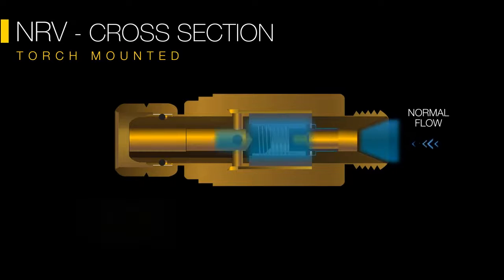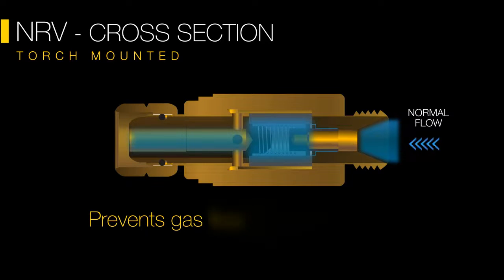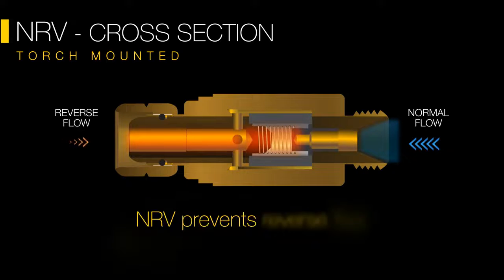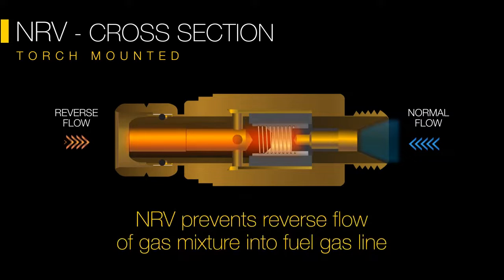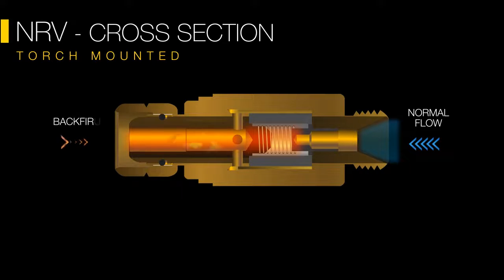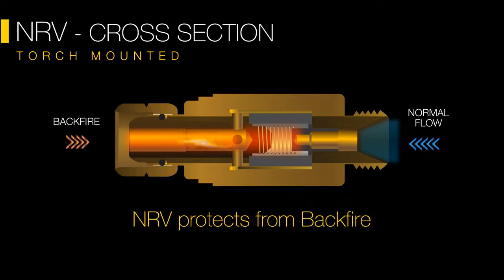The non-return valve allows gas to flow in only one direction. It shuts off gas flow in the reverse direction and prevents the reverse flow of oxygen or flame. It also acts as the first line of defense against backfire and sustained backfire.